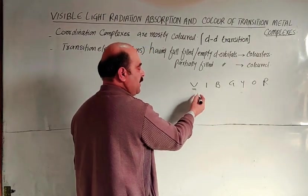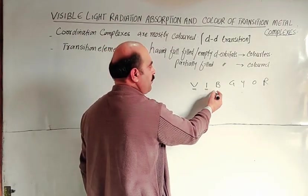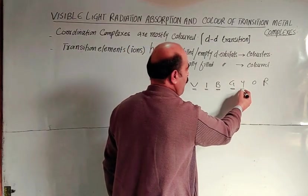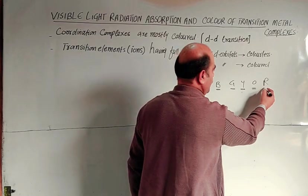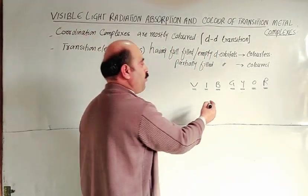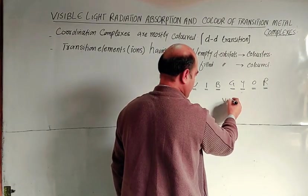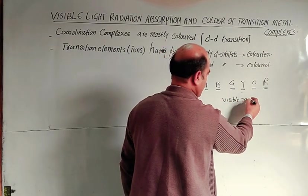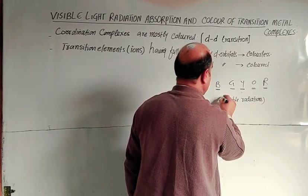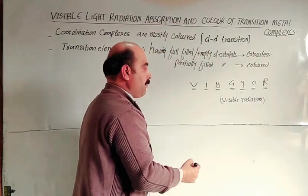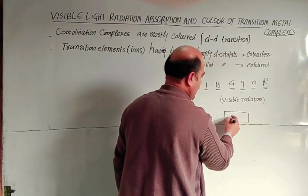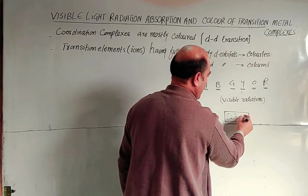The formula is VIBGYOR: violet, indigo, blue, green, yellow, orange, red. These are all visible radiations, visible light.